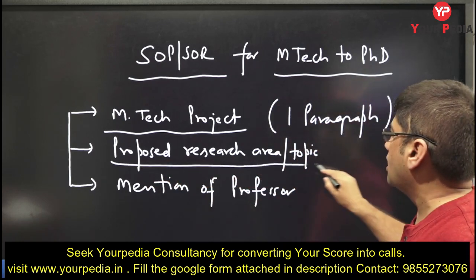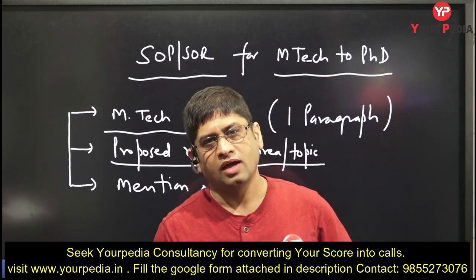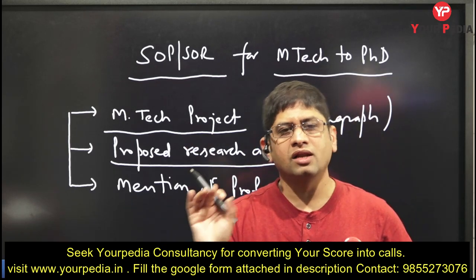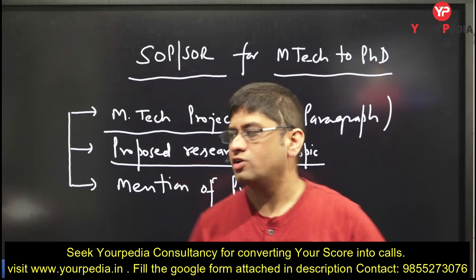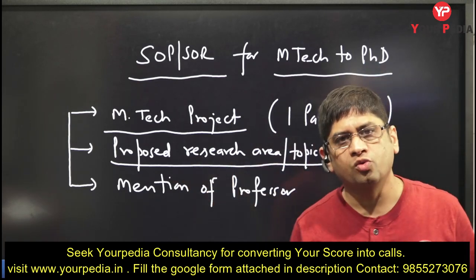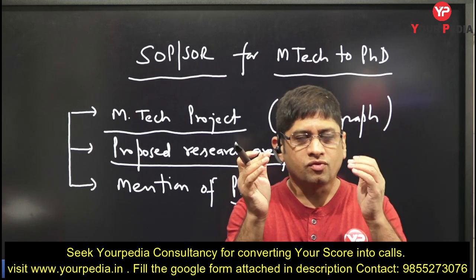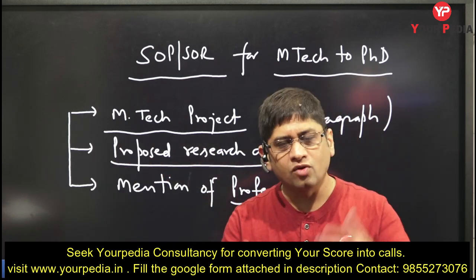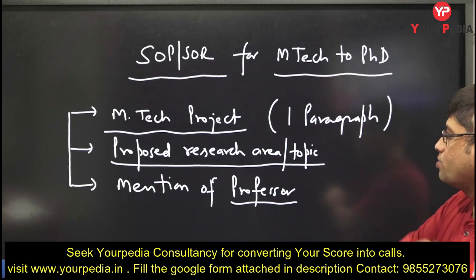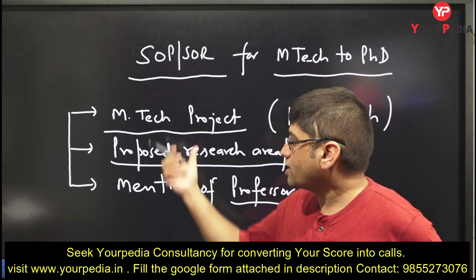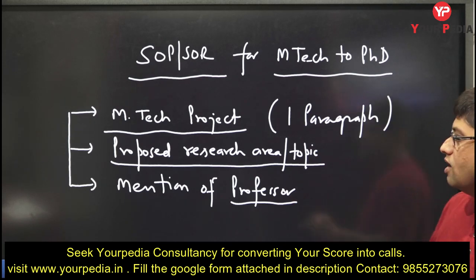The second element is the proposed research area or topic. If I want to join PhD at IIT Delhi in the thermal department and I have done MTech in thermal, I cannot go for PhD in design. I will go to the department of the IIT where I want to do PhD, identify one or two professors whose work is related to my MTech work, and make sure the proposed PhD work is related to what I have already done in MTech.